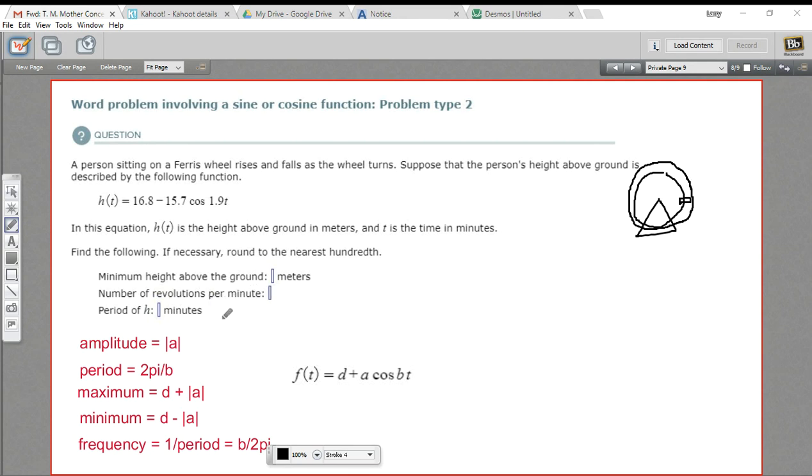And then when we do per minute, because the function is in terms of minutes, we're just going to take the inverse or the reciprocal of that. So this is actually called the frequency of the function, and the frequency is going to be 1 over the period of the function. And then we're also being asked to find the period of this function. We know how to do that already.